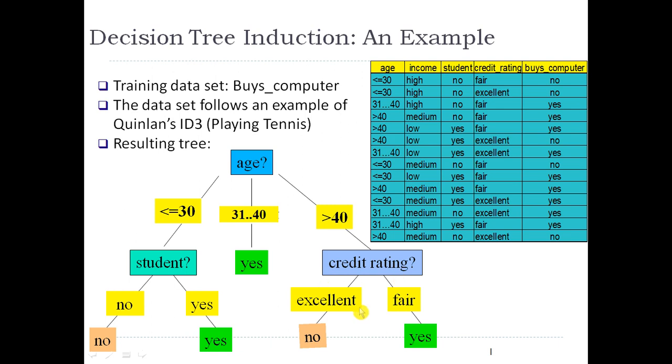If the credit rating is excellent, then Buys_computer label is no. So if the age is greater than 40 and the credit rating is fair, then Buys_computer is yes. If the age is greater than 40 and the credit rating is excellent, then Buys_computer is no.